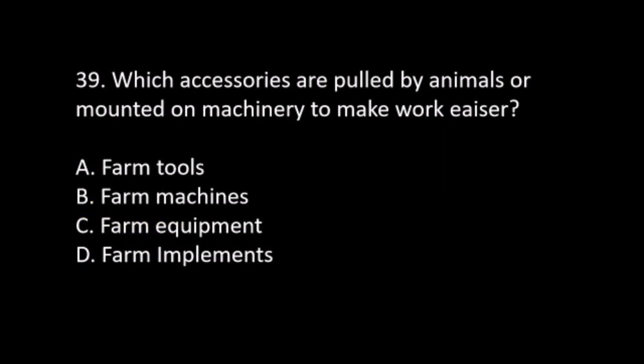Number 39. Which accessories are pulled by animals or mounted on machinery to make work easier? A. Farm tools. B. Farm machines. C. Farm equipment. D. Farm implements. The answer is D. Farm implements.